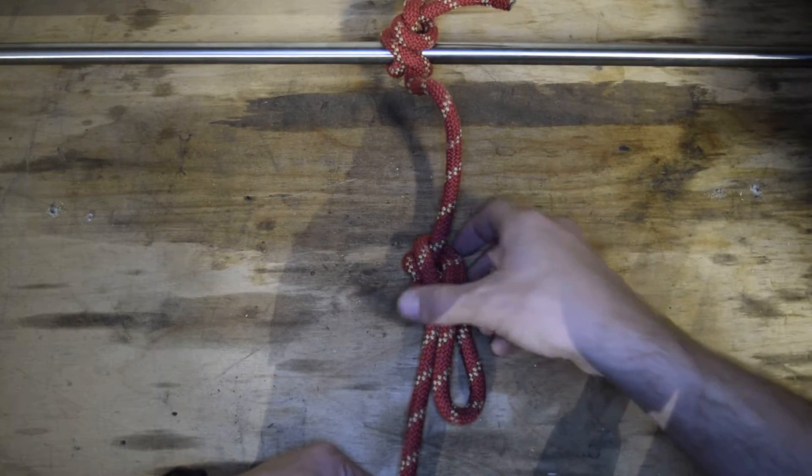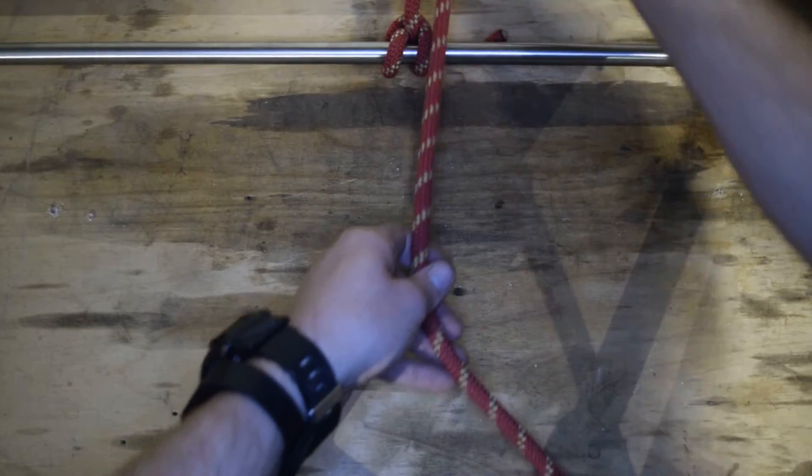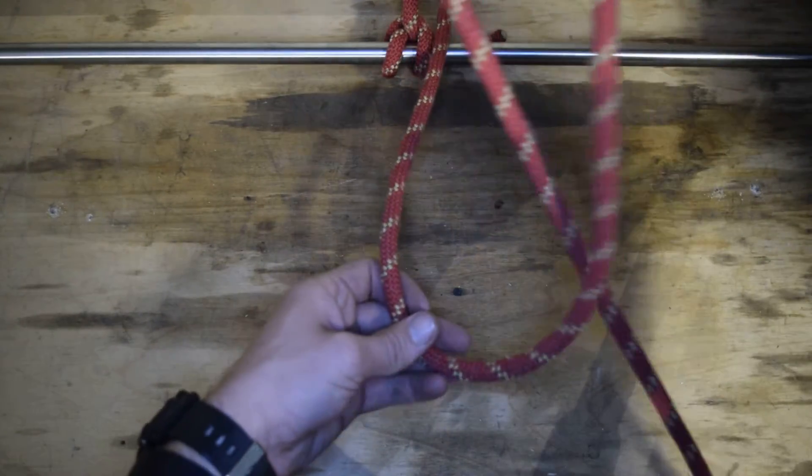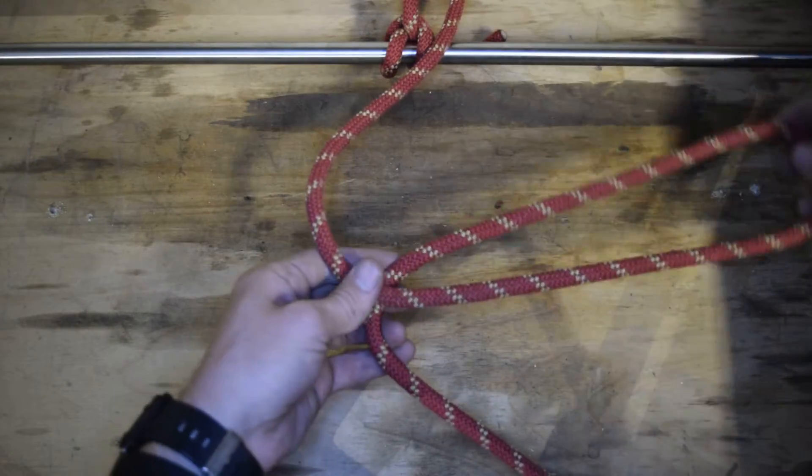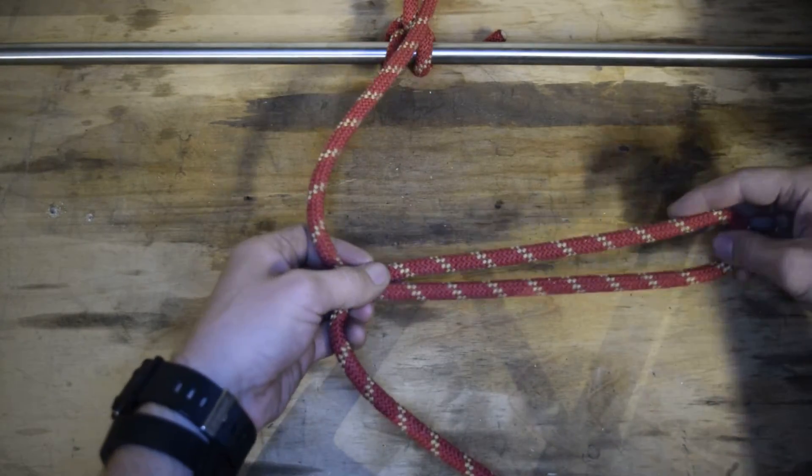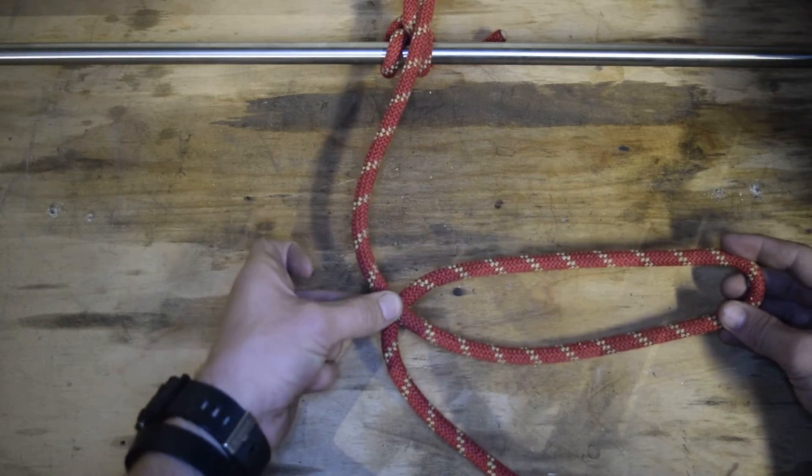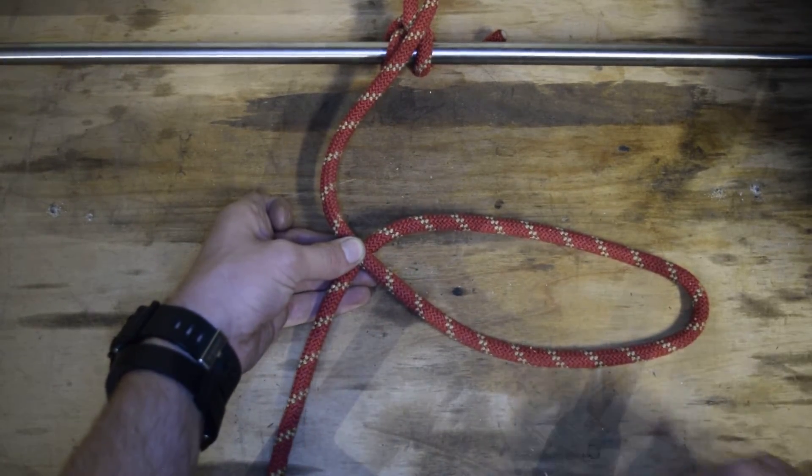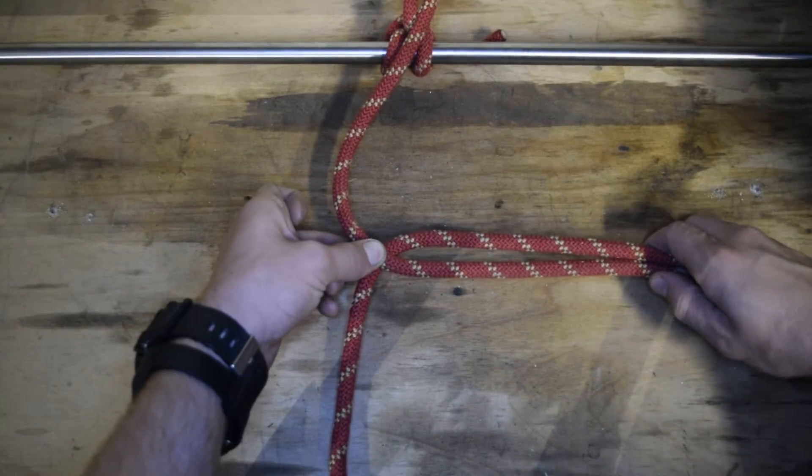So you have one facing this way, and then you can throw that up there, and you get a nice bite. Again, I have this going on for me right now. Pinching the cross, make a bite.